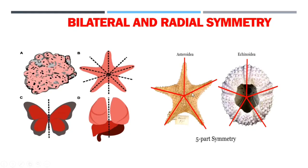Radial symmetry can generally be seen in starfish or echinoderms. Organisms with radial symmetry show a repeating pattern around the central axis. You can find different arms arranged in the same repeating pattern around the central axis.